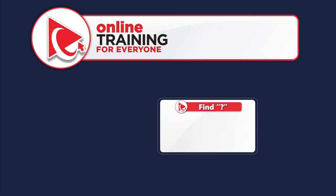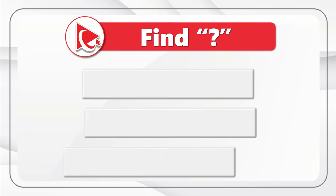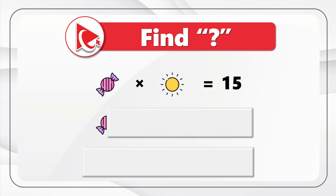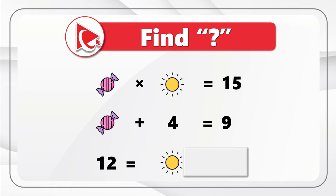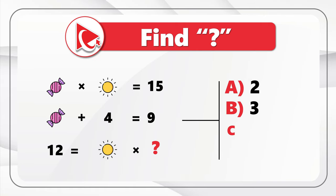I love this question because it is used very frequently to test analytical skills and business math skills. You're presented with three expressions. The first expression is: candy multiplied by sun equals 15. The second expression is: candy plus 4 equals 9. The third and last expression is: 12 equals sun multiplied by question mark. You need to find the question mark and select from four choices: A is 2, B is 3, C is 4, and D is 5.